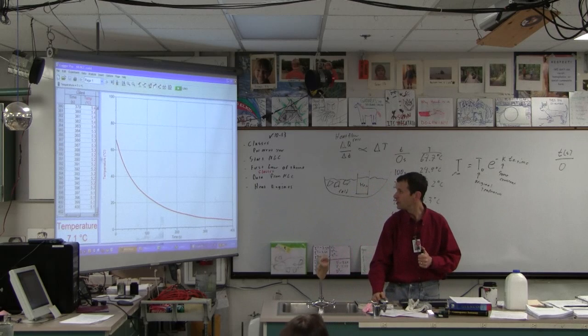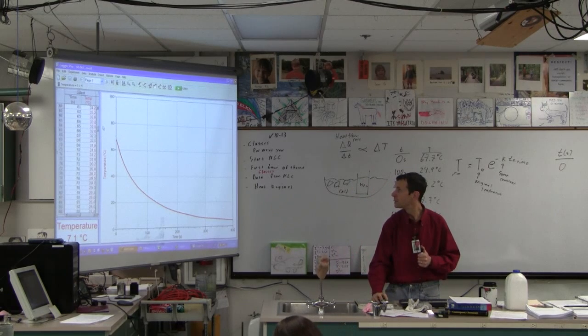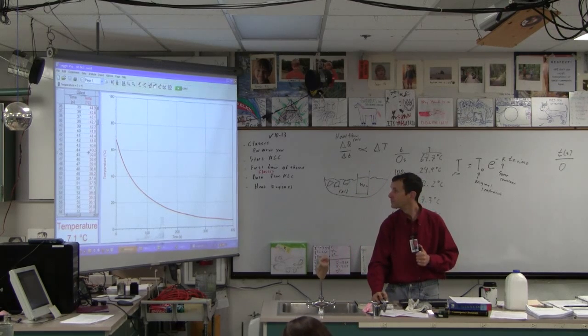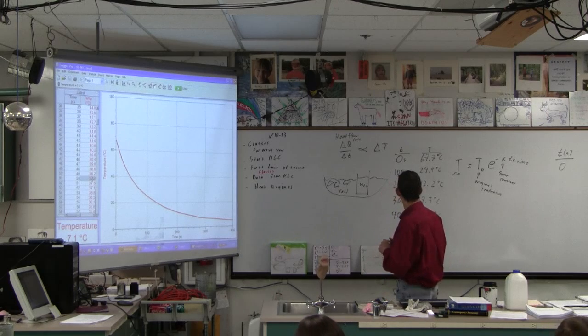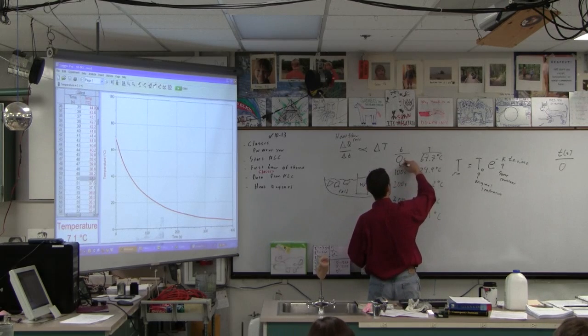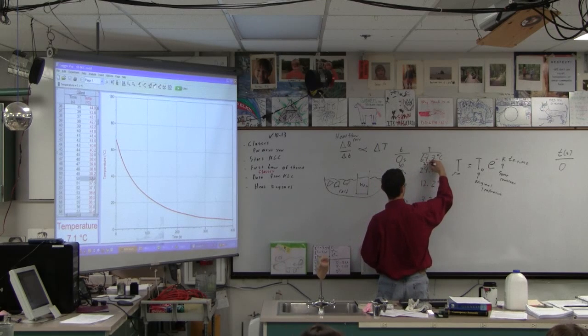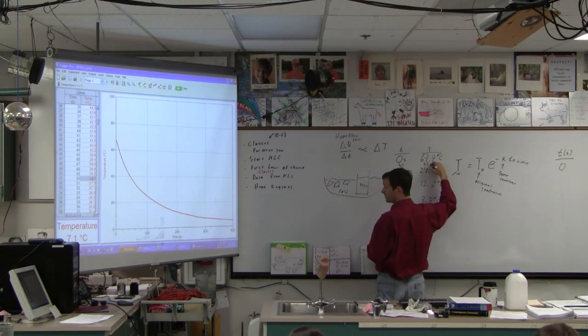I'm going to give you another data point in between these guys so you've got something to put a line through. Let's go back to 50 seconds. 50 seconds is 37.9. I'm just going to put it in there so you've got something because there's a lot of line in between those.